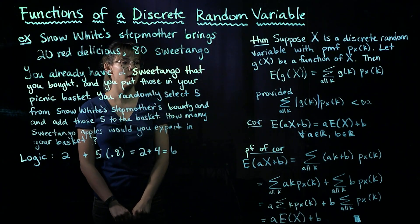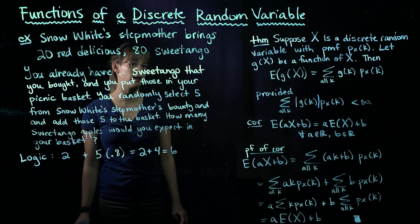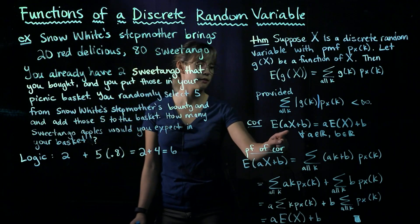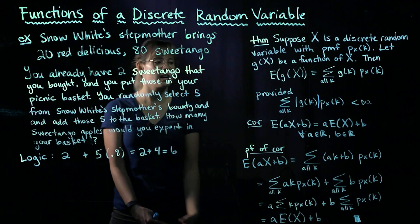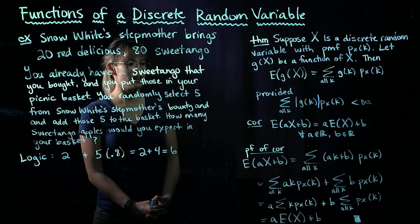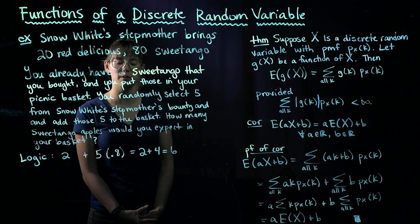Okay, so that's our theorem. A corollary, or a special case of this, is where we have a linear function. So we have aX + b, where a is some real number and b is some real number. Then if we want to calculate the expected value of aX + b, that's just going to be a times the expected value of X plus b.